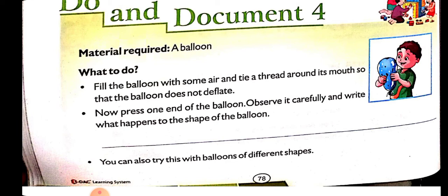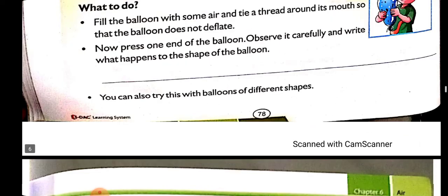You can also do another activity: take one balloon of round shape and one balloon of heart shape. When you fill air in both, you can see that the inflated round balloon takes a round shape and the other takes a heart shape. So it means air has taken the shape of the object it fills — whichever object we fill it into, it will take the shape of that same object.